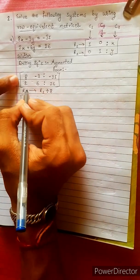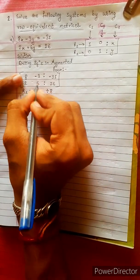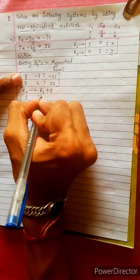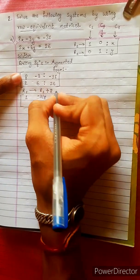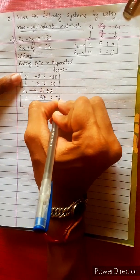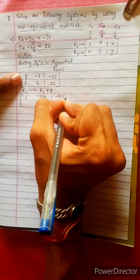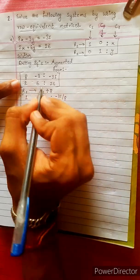R2 is changed. 8 by 8 is 1. This is minus 3 by 8. This is minus 31 by 8.